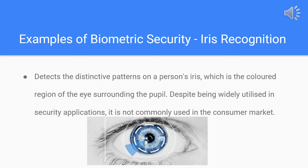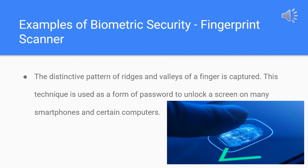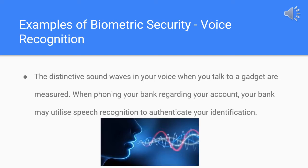Although iris recognition is widely used in security applications, it isn't typically used in the consumer market. The third method is the fingerprint scanner, which captures the unique patterns of ridges and valleys on a finger. Many smartphones, Apple products, and some laptops use this technology as a type of password to unlock a screen.